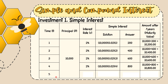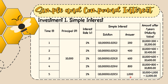For year 5, investing 10,000 with the same 2% interest rate. Solution: 10,000 × 0.02 × 5 = 1,000 pesos interest. So the maturity value after 5 years is 10,000 + 1,000 = 11,000 pesos.